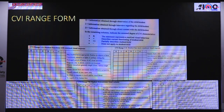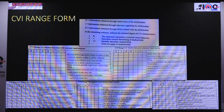In the CVI range, 'R' represents a resolved visual behaviour, '+' describes the current functioning of the child, '+/-' means partially present, and '-' means not applicable. The score ranges from 1 to 10, with different questions assessable both before and after intervention is initiated.